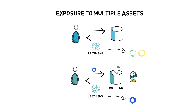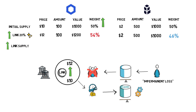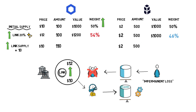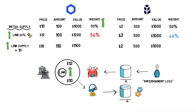Let's see what would happen if someone supplied more LINK to our BNT/LINK pool. Starting with the same initial balances as before, instead of an increase in the price of LINK, a new liquidity provider adds 10 more LINK to the pool: LINK price $10, LINK amount 110, BNT price $2, BNT amount 500, LINK value $1,100, BNT value $1,000, LINK weight 52%, BNT weight 48%. Again, we can see that the token weights in the pool got adjusted automatically.